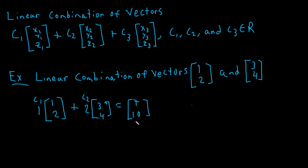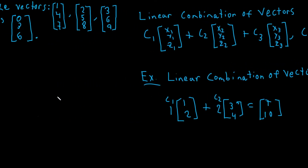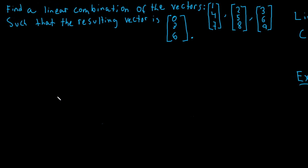To reiterate: all we really did was multiply the first vector by c1 and the second vector by c2. Since c1 and c2 are just real numbers, we get a third vector, which is 7, 10. We can find a linear combination of any set of vectors as long as they have the same dimension. In the example we're about to do, the vectors will have dimension 3. So let's go back to the problem.